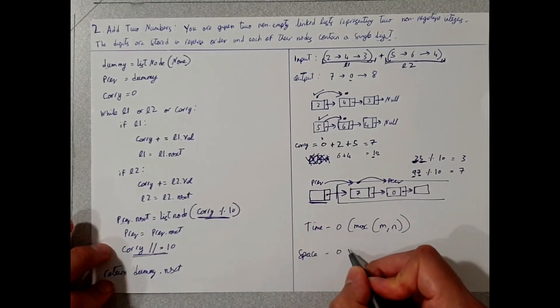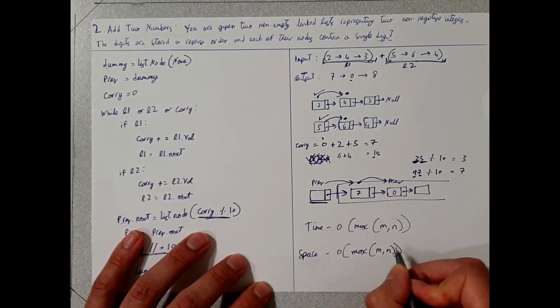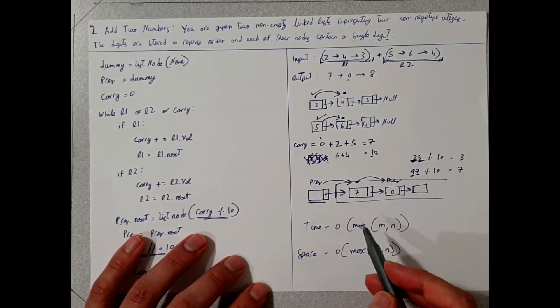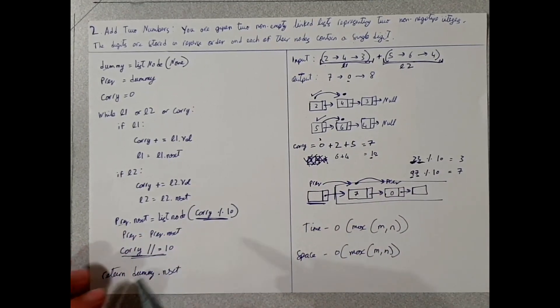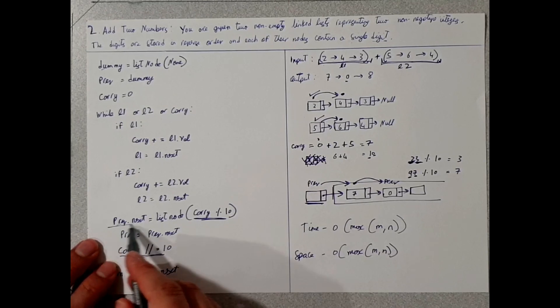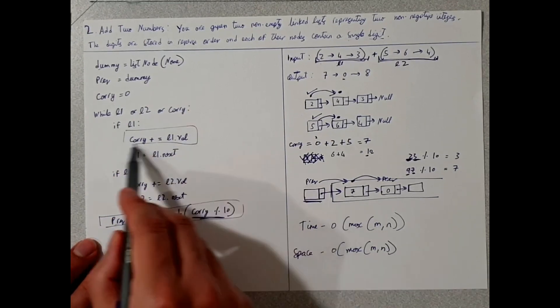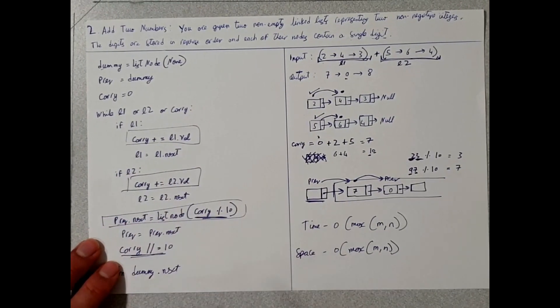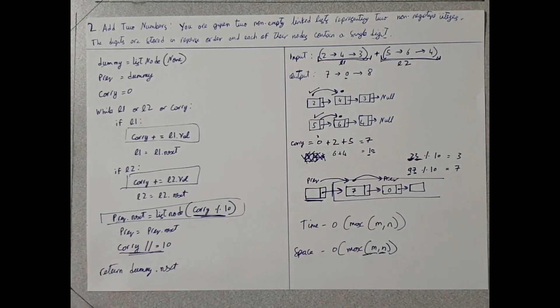Again, the space complexity will be also O max of m, n, since we have to create a carry to save the values before we converted it into a list node. So which would be, yeah, we have to save these values, so all of these will be contributing into creating a space complexity. Thank you.